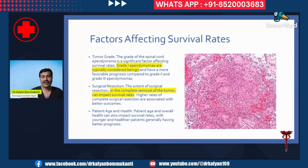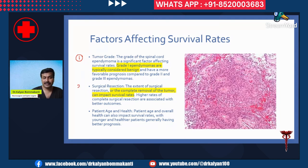What are the important factors affecting survival rates? First is the tumor grade, which is the most important factor. Equally important is surgical resectability. Third is the size of the tumor — though not mentioned in the slide, size also matters. Fourth is patient health and age.